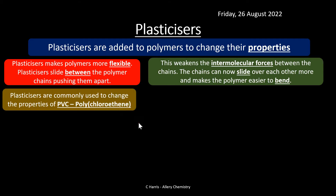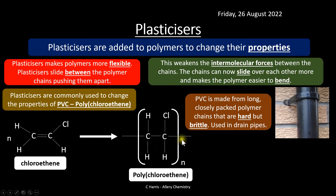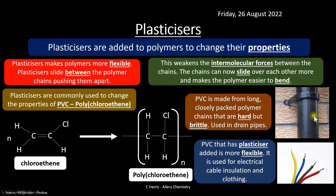Plasticizers are commonly used to change the properties of PVC — polychloroethene, or polyvinyl chloride. There's the chloroethene monomer with its double bond; we open that double bond up and form the repeat unit. PVC is made from very long loosely packed polymer chains — hard and brittle, so it's used in drain pipes. But when we add a plasticizer, those same molecules become more flexible and can slide over each other, making it suitable for electrical cable insulation — same plastic, just with a plasticizer added.